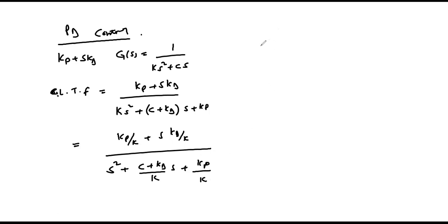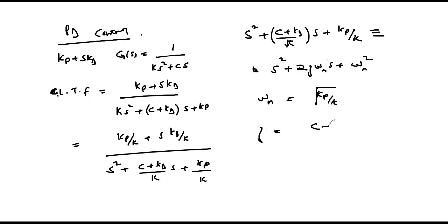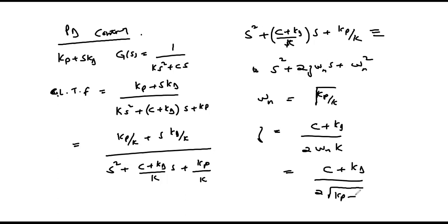Comparing the characteristic equation s² + (c + kd)/k·s + kp/k with the general second order form s² + 2ζωn·s + ωn², we notice that ωn = √(kp/k) still, and the new damping factor ζ = (c + kd)/(2√(kp·k)).